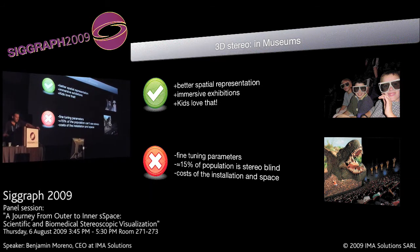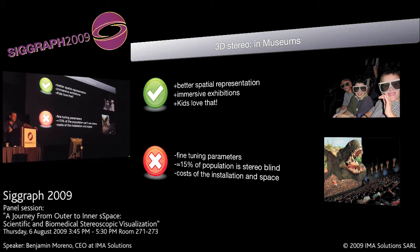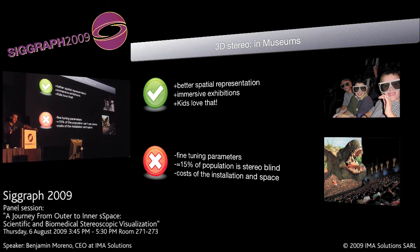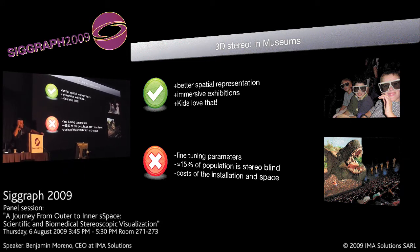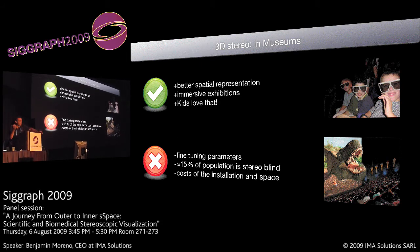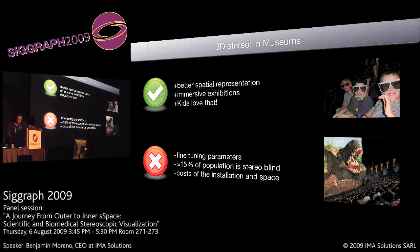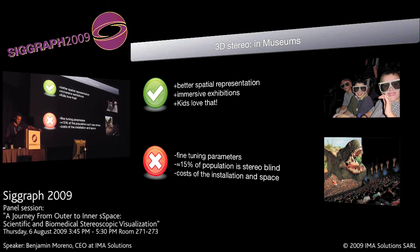The challenges are that you have to fine-tune parameters using really great hardware. Around 15% of the population is stereo blind, because of binocular vision defects, so you have to take care about that. And also, when you are working for museums, you have to be realistic looking at the cost of the equipment and the space.